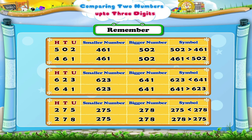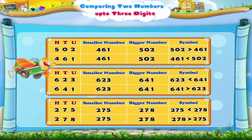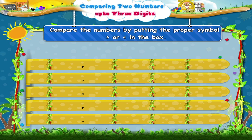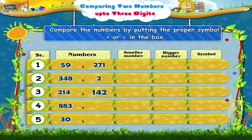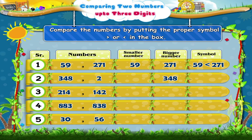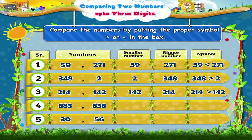Now let us revise what we have just learned. Compare the numbers by putting the proper bigger than or smaller than symbol in the box. 59 is smaller than 271. 348 is bigger than 2. 214 is bigger than 142. 883 is bigger than 838. 30 is smaller than 56.